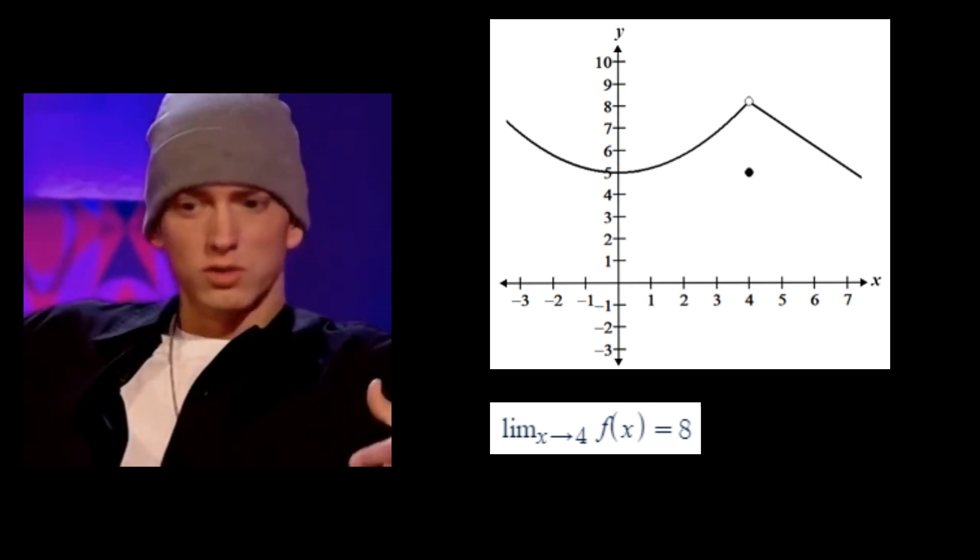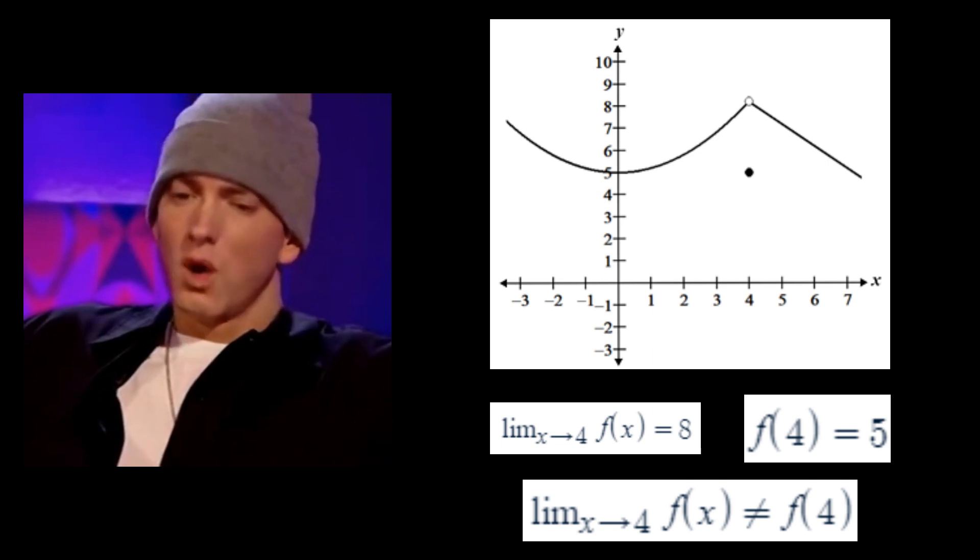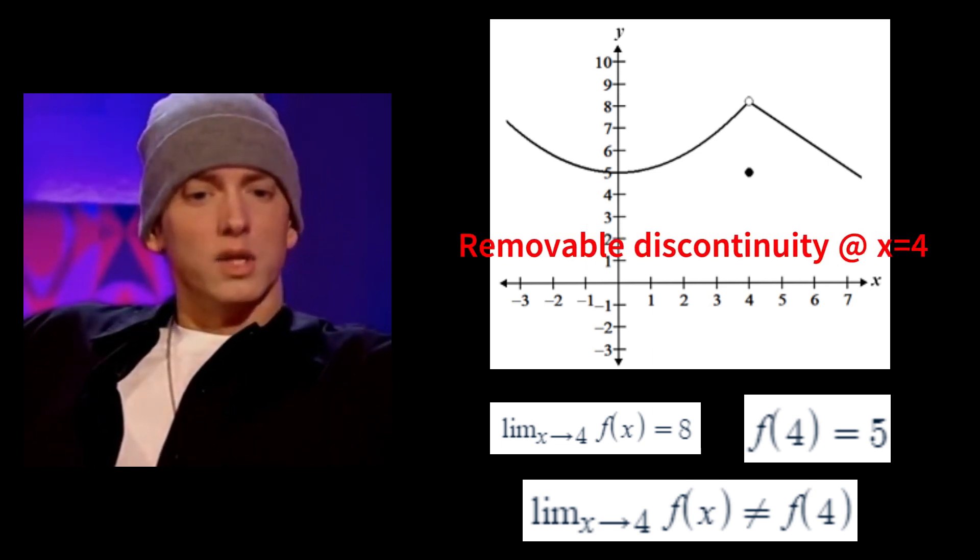Oh, I see. So let's look at this example. Even though the limit as x approaches 4 is 8 and f of 4 is 5, since these values are not equal, the function is not continuous at x equals 4. We call this a removable discontinuity.